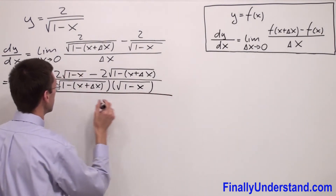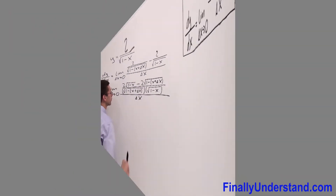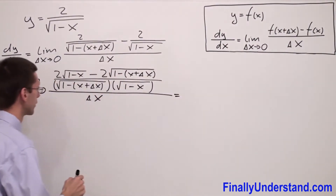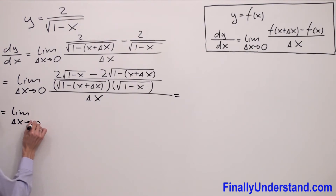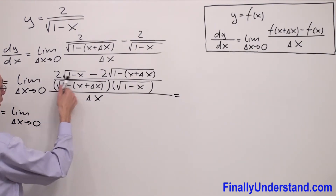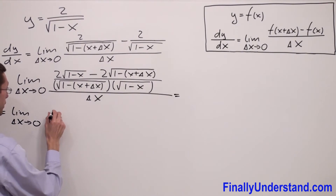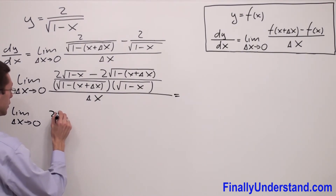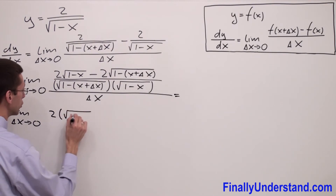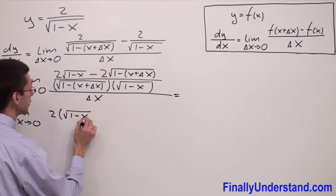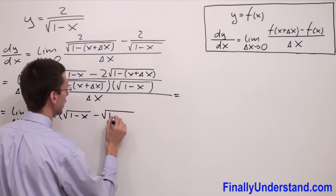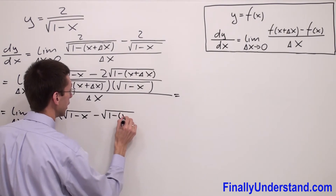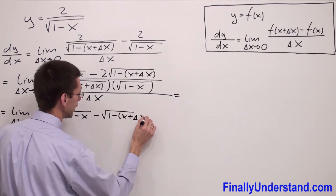So I'm going to write: limit as delta x approaches 0. In the numerator I have 2 times square root of (1 minus x) minus 2 times square root of (1 minus x plus delta x).